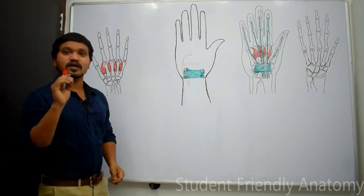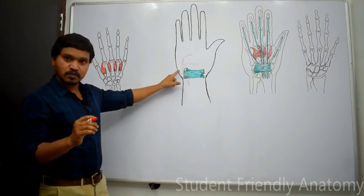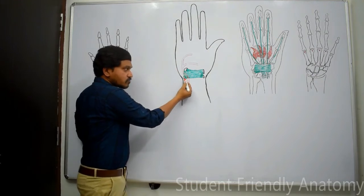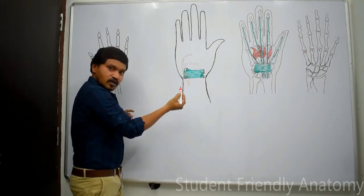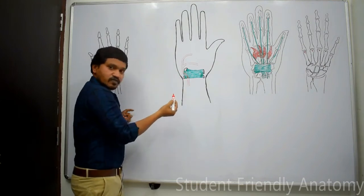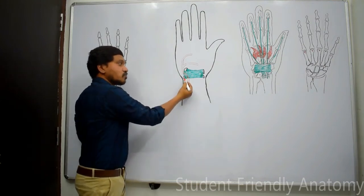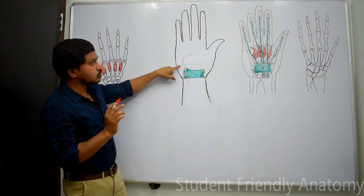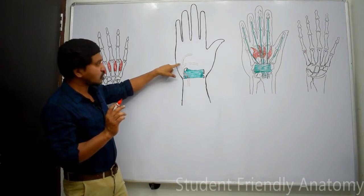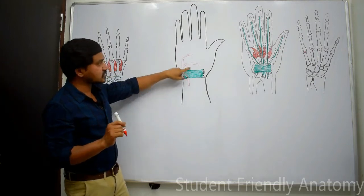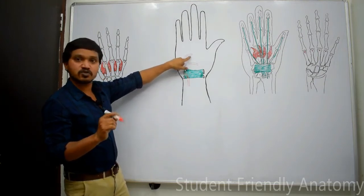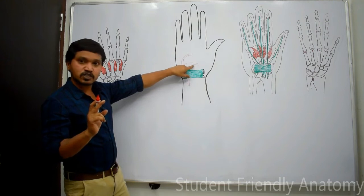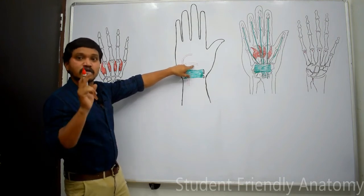To summarize: the ulnar artery passes superficial to the flexor retinaculum, deep to the volar carpal ligament, through Guyon's canal, and lateral to the pisiform bone alongside the ulnar nerve. In the palm, it divides into a superficial branch — which anastomoses with a branch of the radial artery forming the superficial palmar arch — and a deep branch, which anastomoses with the main continuation of the radial artery forming the deep palmar arch.